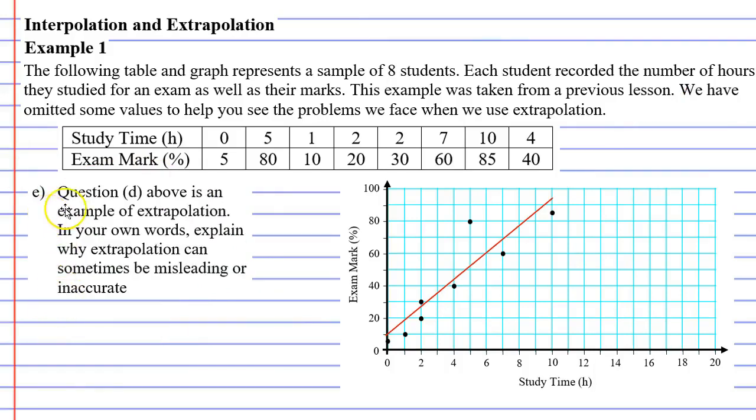In question E, it refers to question D, the one we did previously, saying it's an example of extrapolation. It wants us to explain in our own words why extrapolation can sometimes be misleading or inaccurate.